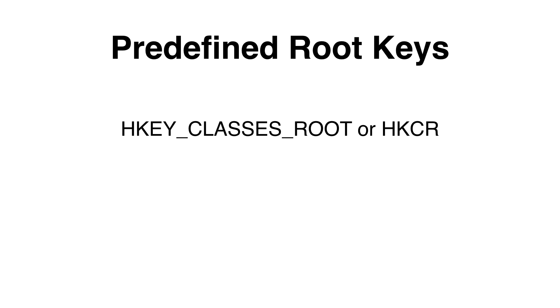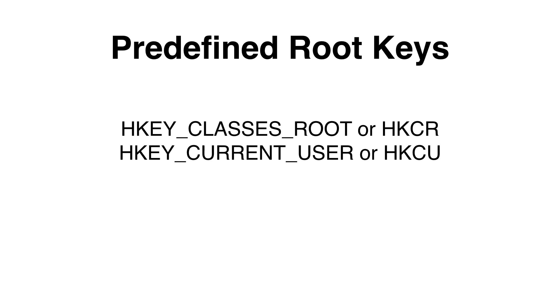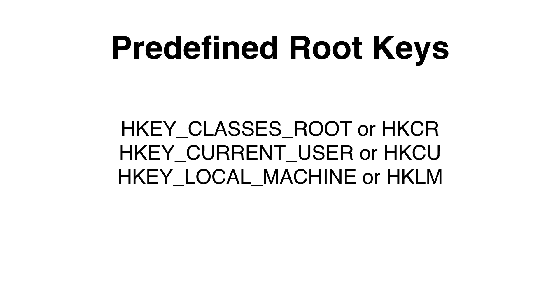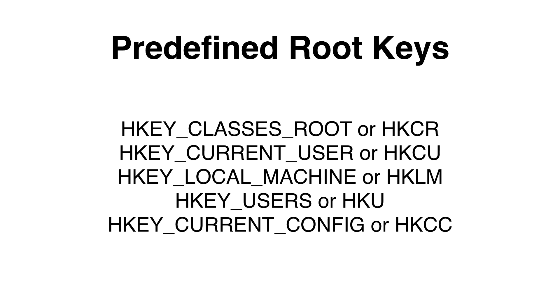The registry can only be accessed from a known root key handle. These root keys are: HiveKey ClassesRoot, which contains information about registered applications; HiveKey CurrentUser, which stores settings specific to the current logged-in user; HiveKey LocalMachine (HKLM), which stores settings specific to the local computer; HiveKey Users (HKU), which contains keys for each user profile actively loaded on the machine; and HiveKey CurrentConfig (HKCC), which contains information gathered at runtime.